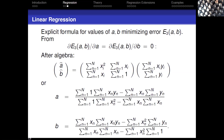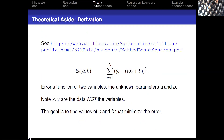As long as there's some variation in the x's there will always be a solution — and that's a wonderful thing to know. We actually have explicit closed-form formulas for a and b.